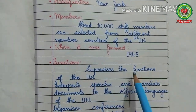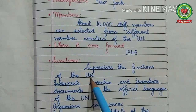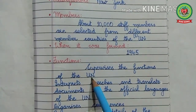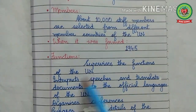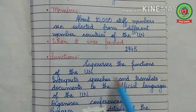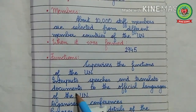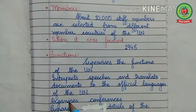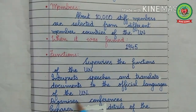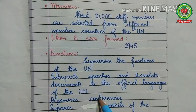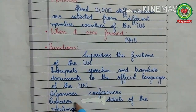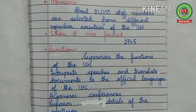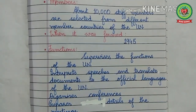Functions of the Secretariat: supervises the functions of the UN — that means the Secretariat performs the day-to-day activities of the United Nations. It interprets speeches and translates documents to the official languages of the UN. It organizes conferences and prepares details of the meetings.